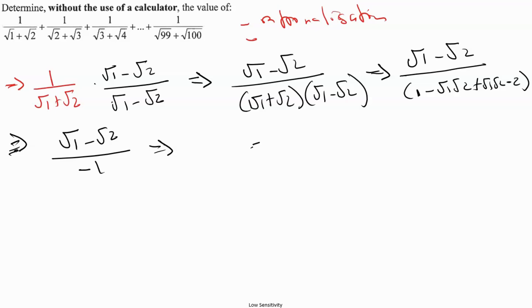So this becomes root 1 minus root 2 over minus 1, which we can simplify to negative 1 plus root 2. That's how we simplify that. But we notice something here. We can extend the same thing to all the other expressions here.